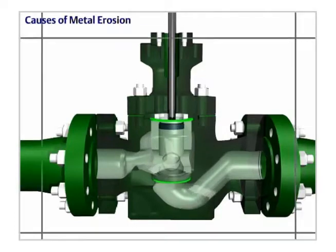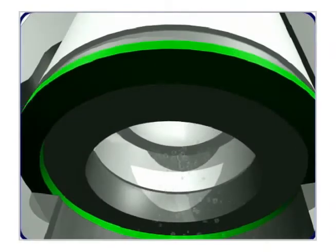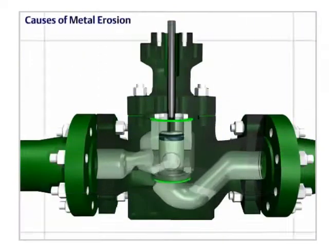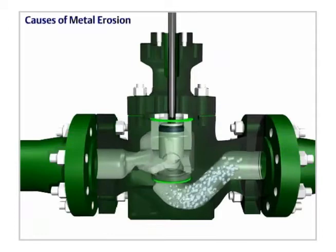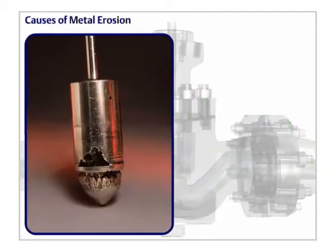Wherever there's a restriction in flow, the decrease in pressure can cause a fluid to reach its vapor point. Flashing occurs when the fluid vaporizes and remains a vapor. Metal erosion caused by flashing appears smooth and shiny.